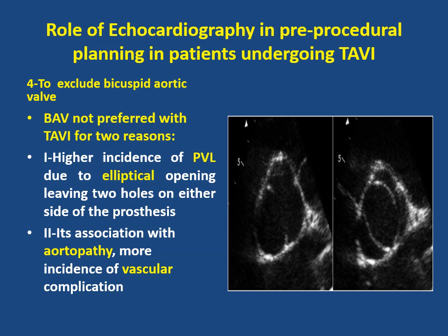Bicuspid aortic valve is not preferred with TAVI for two reasons: higher incidence of paravalvular leak due to elliptical opening leaving two holes on either side of the prosthesis, and its association with aortic dilation. Bicuspid aortic valve is also associated with more incidence of vascular complications.